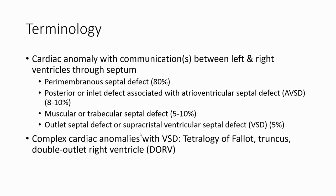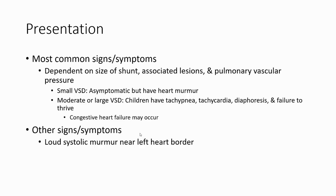The most common form of VSD is the peri-membranous septal defect. Signs and symptoms depend on the degree of shunting, associated lesions, and pulmonary vascular pressure. Small VSDs are usually asymptomatic but have a heart murmur. Moderate or large VSDs cause children to have tachypnea, tachycardia, diaphoresis, failure to thrive, and congestive heart failure may occur.